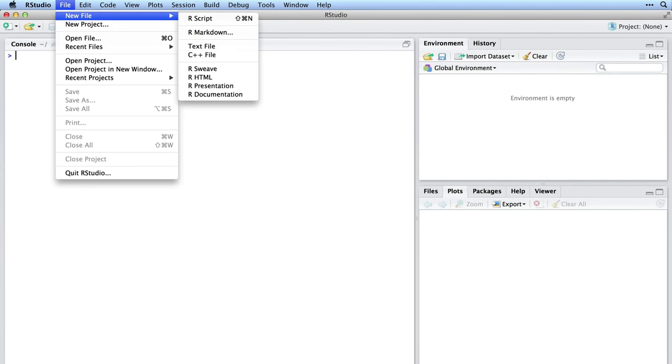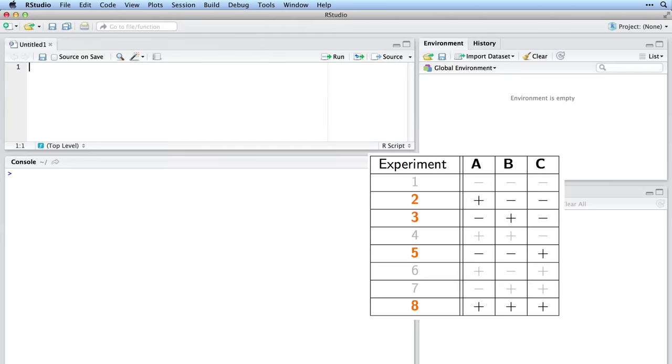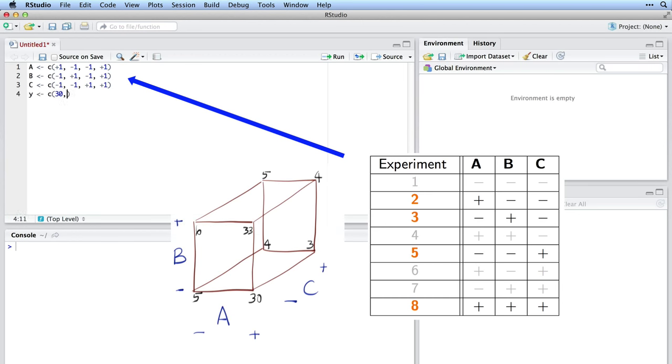Using the best choice design I talked about earlier, where you've only done experiments 2, 3, 5 and 8 from the original set, I'm going to ask the software to create new variables for A, B and C, which only include those 4 experiments. And here are the 4 outcomes at those conditions.